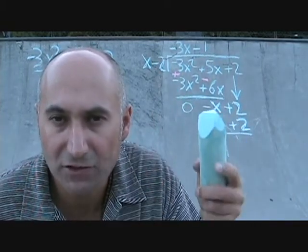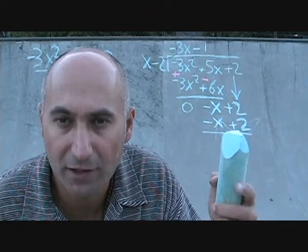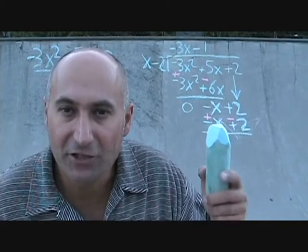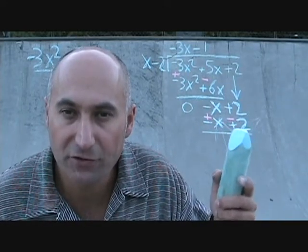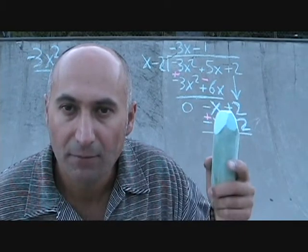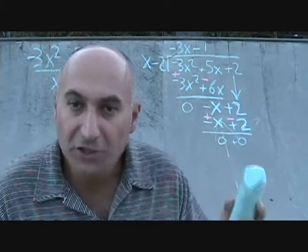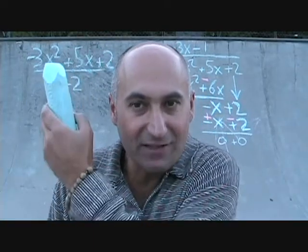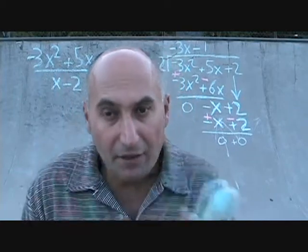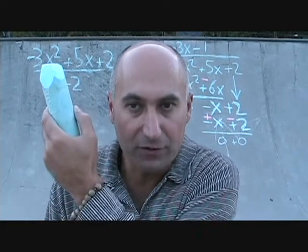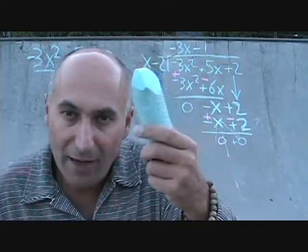Now I change the signs in the bottom row and add. Negative x changes to positive x, and positive 2 changes to negative 2. Negative x plus x is zero, and positive 2 minus 2 is zero — we're down to a remainder of zero. That tells us this divisor divides evenly into the dividend. A remainder of zero means the divisor is a factor of the top expression.